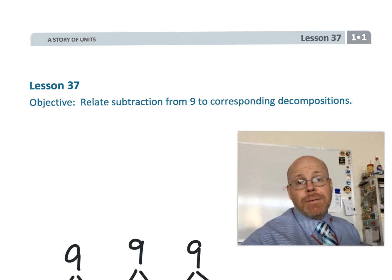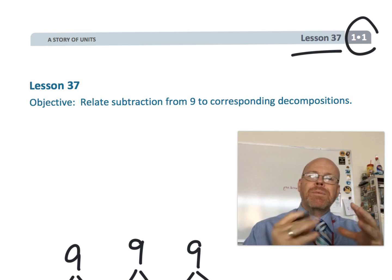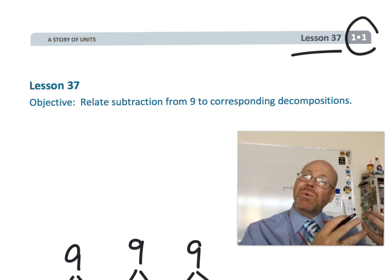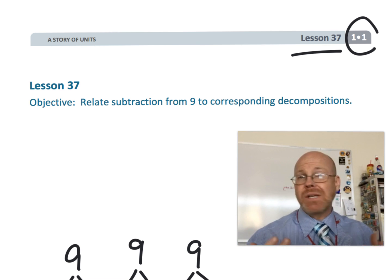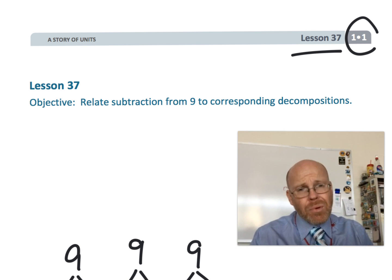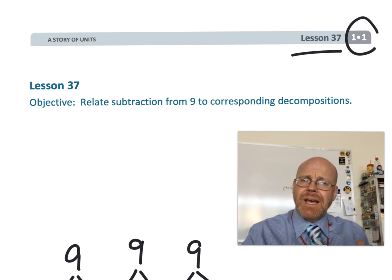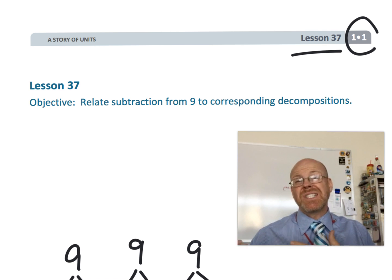All right this is first grade module 1 lesson 37 and in this lesson we're going to be finding the number bonds that equal 9. So in our last lesson we did all the number bonds that equal 10. That's a really important one. So if you haven't seen that video go back and watch lesson 36.